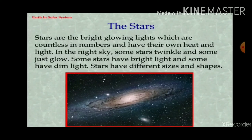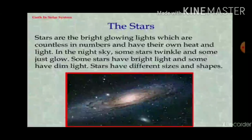Now we will talk about stars. Stars are the bright, glowing objects which are countless in number and have their own heat and light. In the night sky, some stars twinkle and some just glow. Some stars have bright light and some have dim light. Stars have different sizes and shapes.